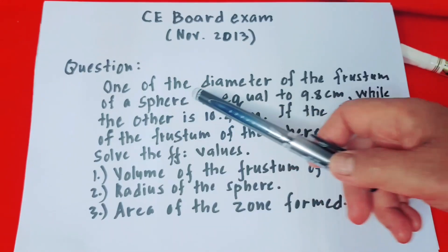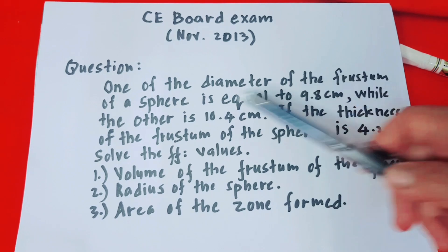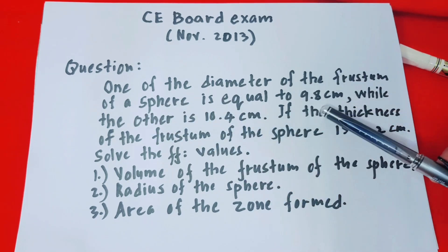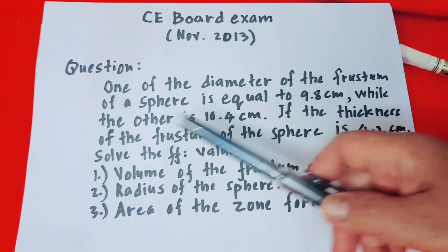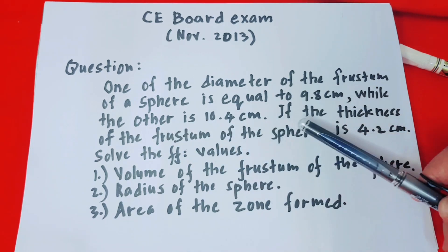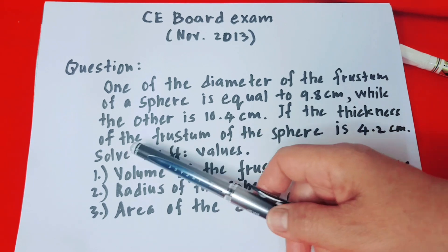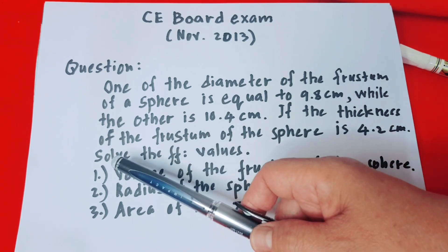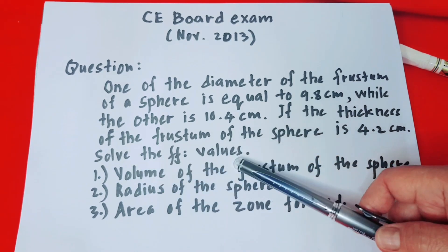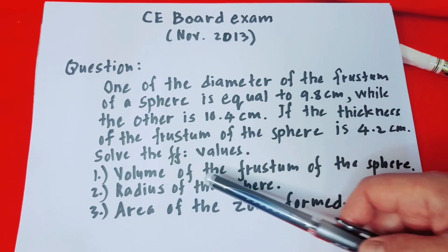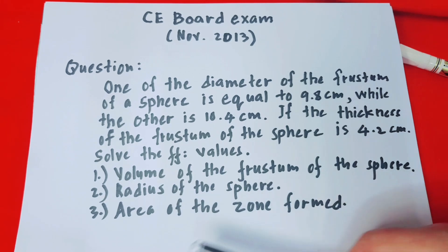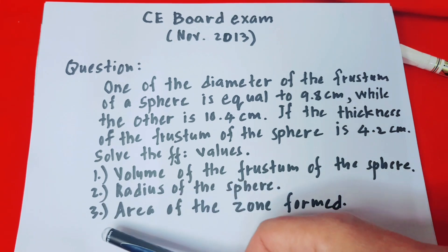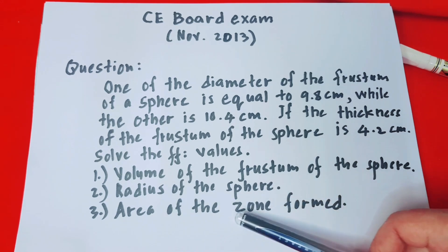The question: one of the diameters of the frustum of a sphere is equal to 9.8 centimeters while the other is 10.4 centimeters. If the thickness of the frustum of the sphere is 4.2 centimeters, solve the following: one, the volume of the frustum of the sphere; two, the radius of the sphere; three, the area of the zone formed.